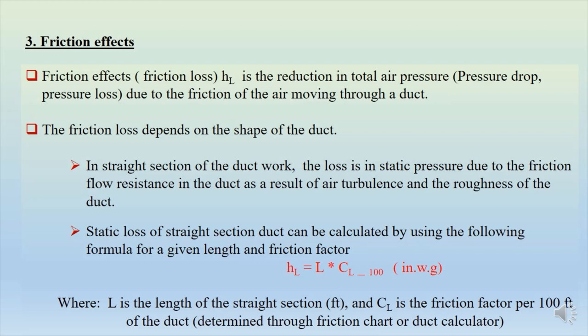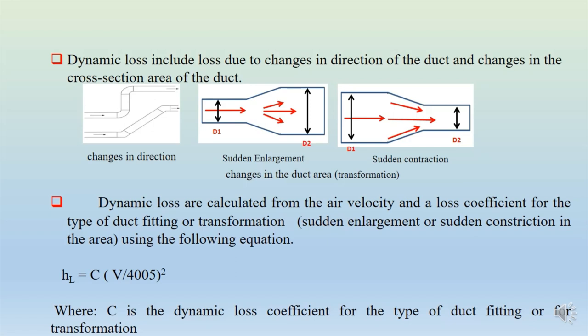Static loss for a straight section of duct can be calculated using the formula HL = L × CL/100, where HL is the static loss in inches water gauge, L is the given length of the duct, and CL100 is the friction factor per 100 feet. This friction factor per 100 feet can be determined through a friction chart or duct calculator.